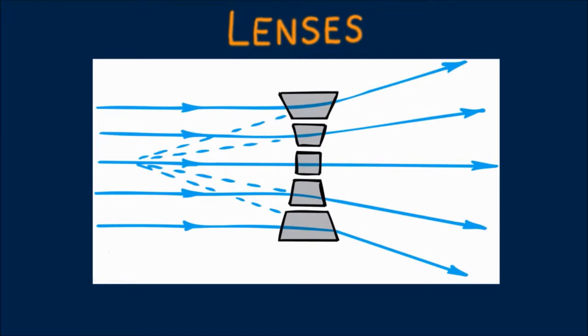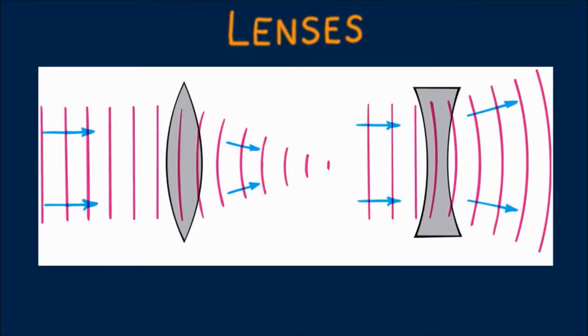Real lenses are not made of prisms and are made of solid pieces of glass with surfaces that are often ground to a spherical shape. We see here how smooth lenses refract waves. Sample of wave fronts are shown in red.